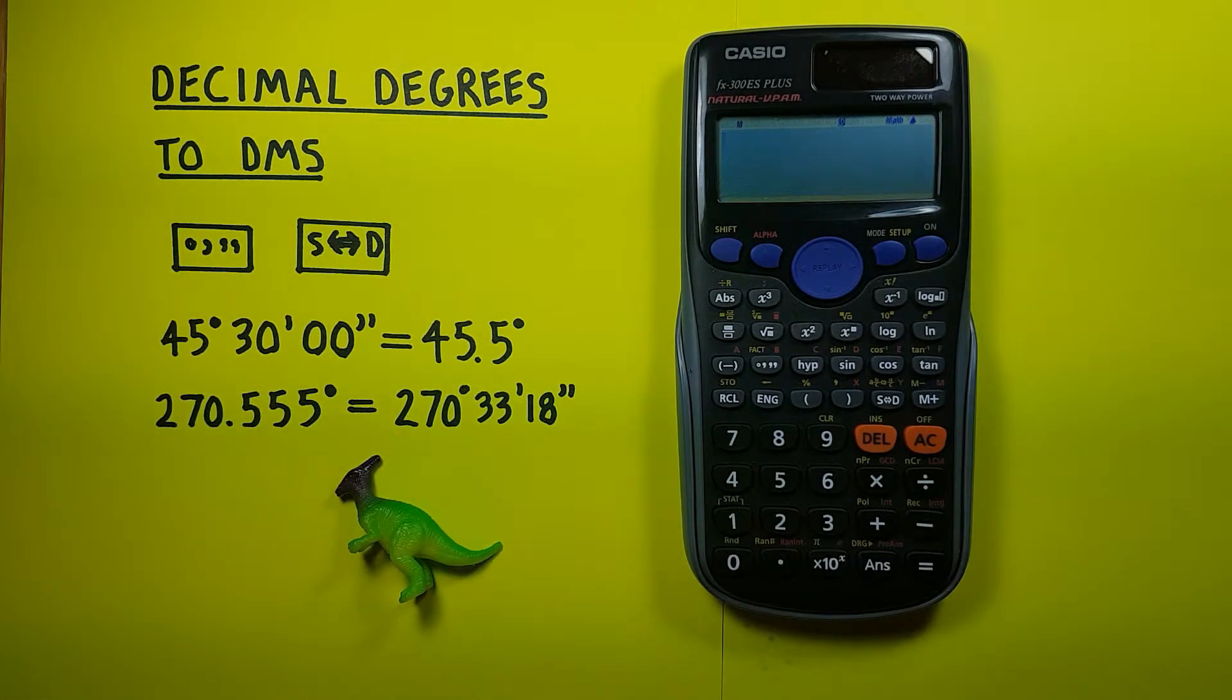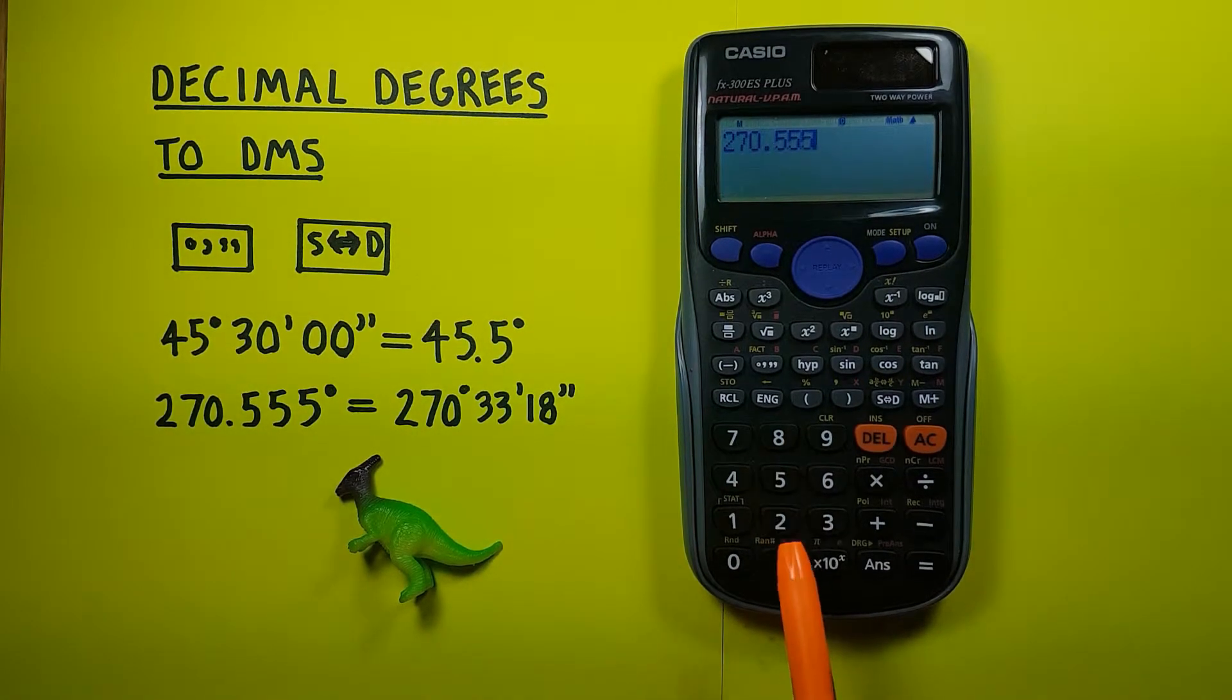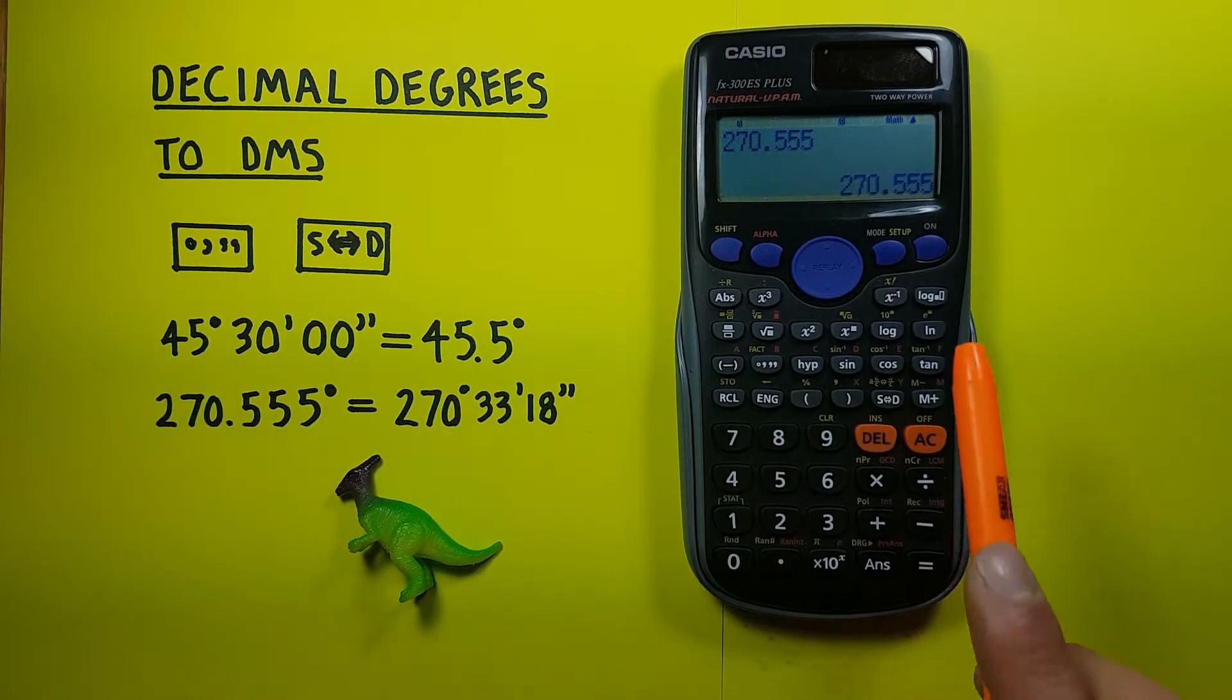This also works in reverse. Let's say we have 270.555 decimal degrees. Well, we can place that on our calculator like that. And then press equals. So that's down at the bottom of the screen.